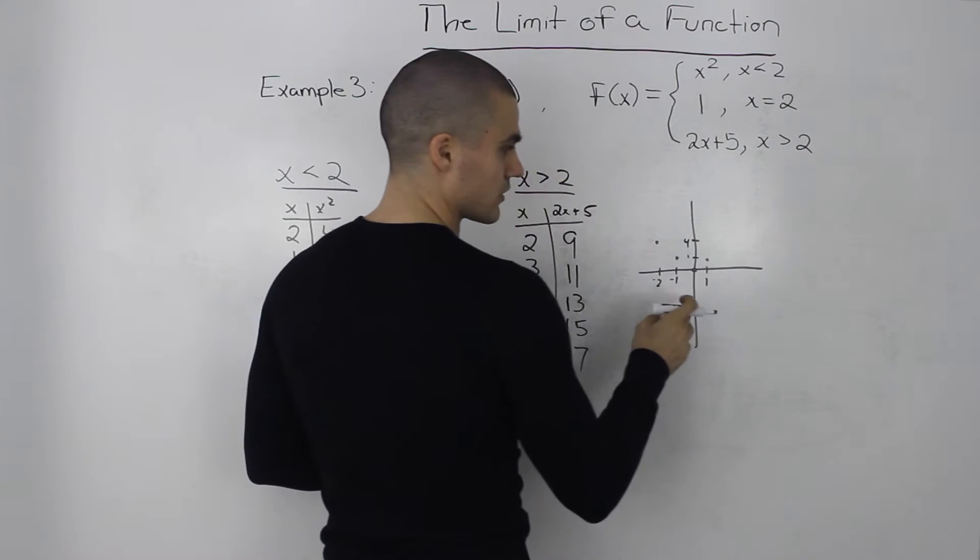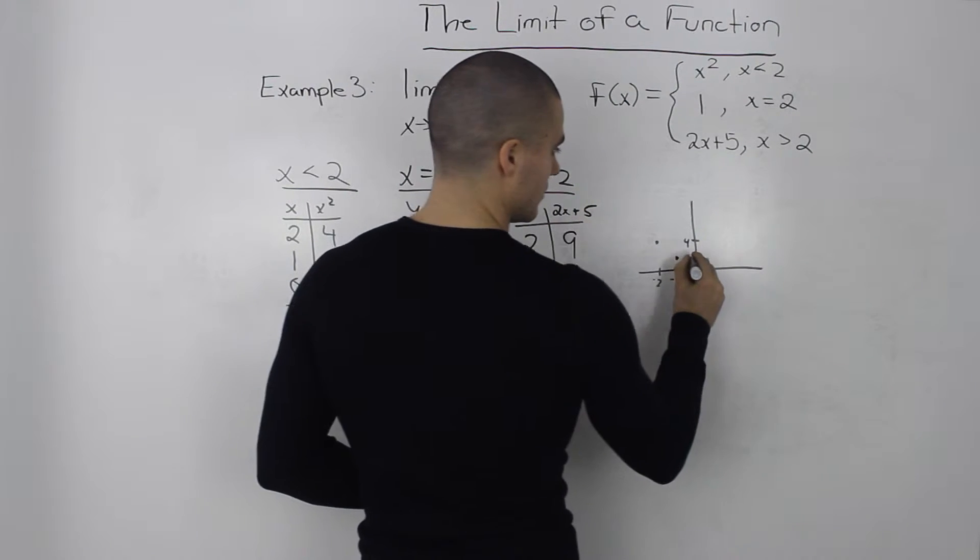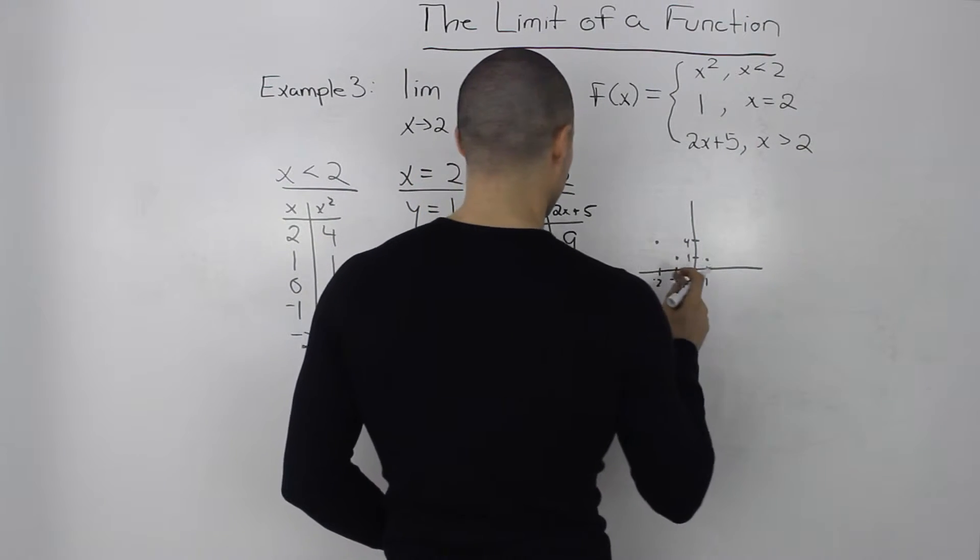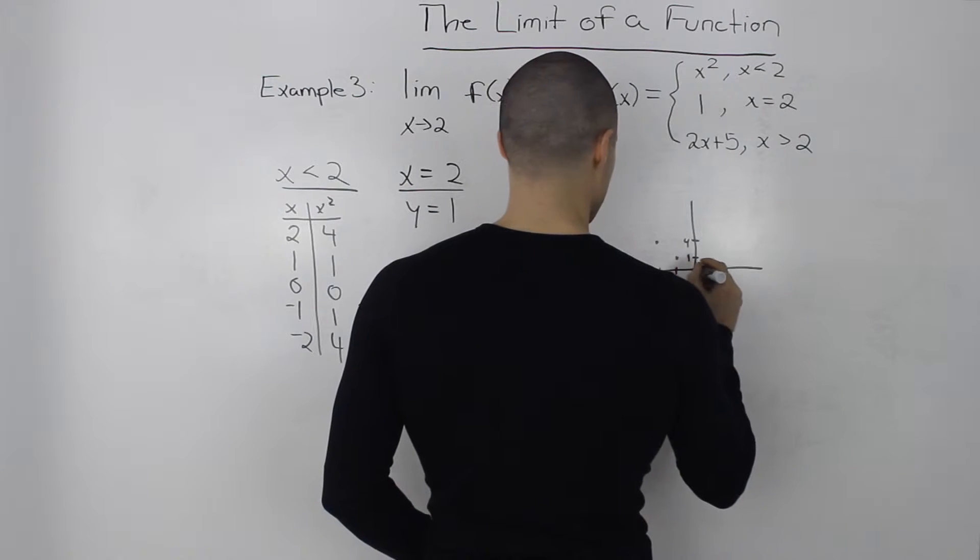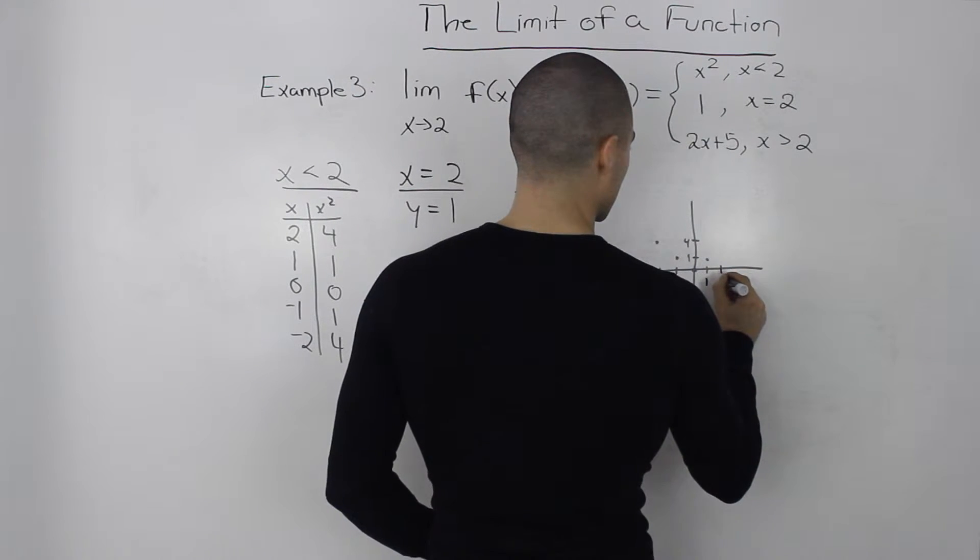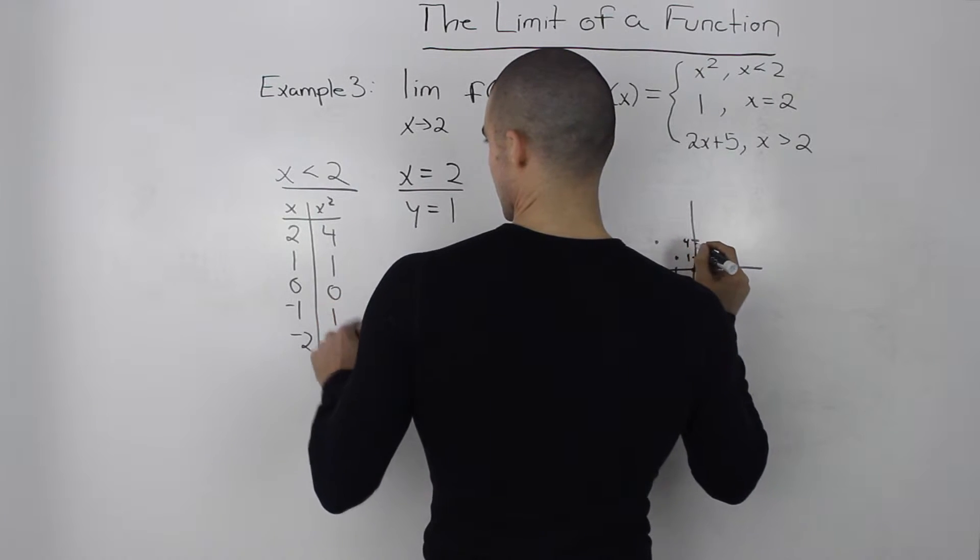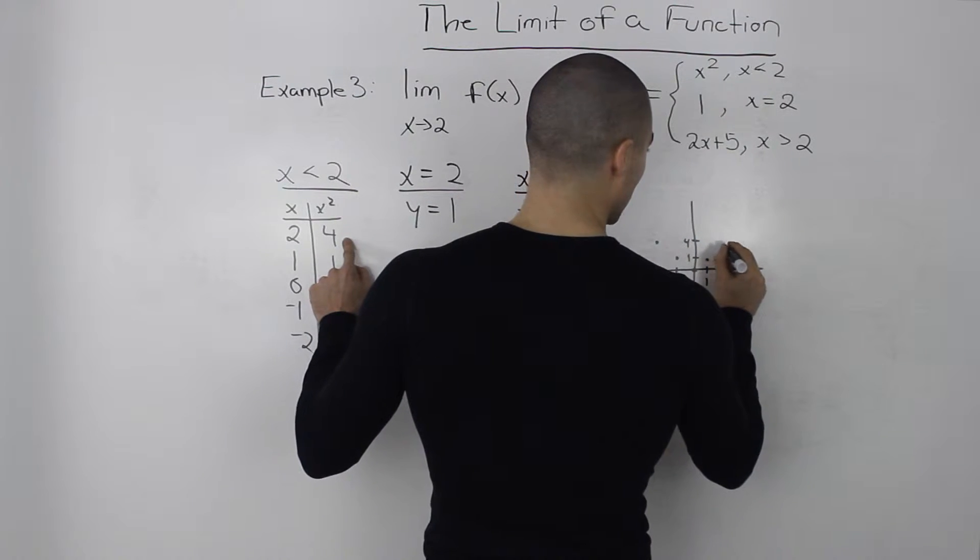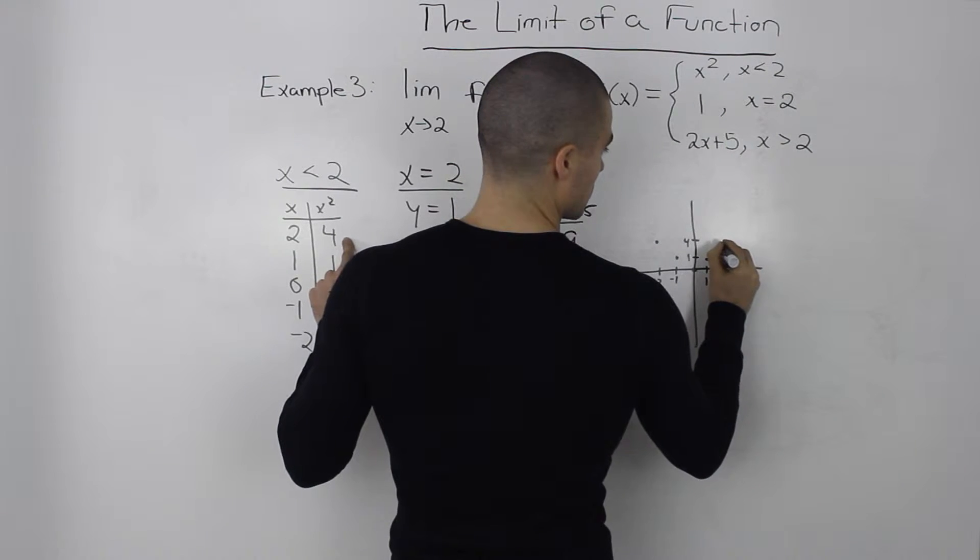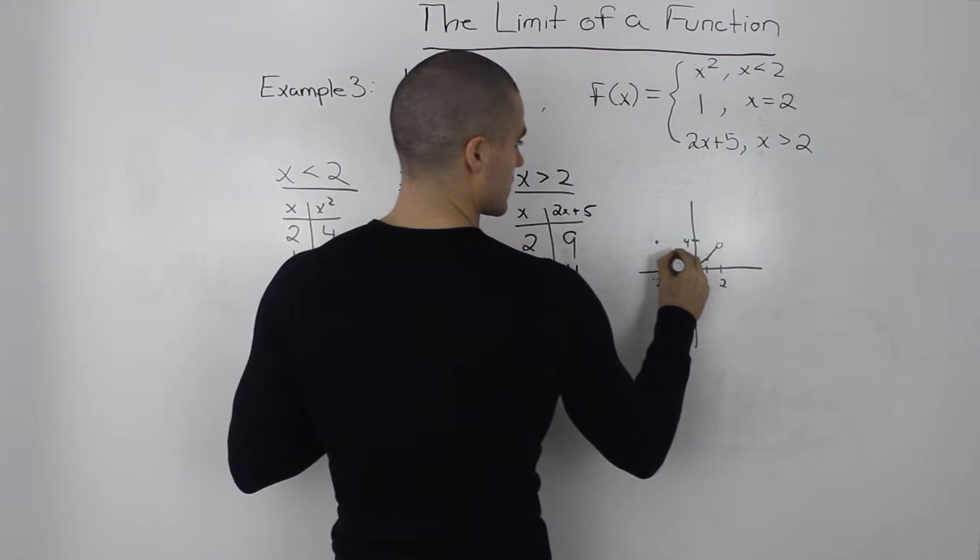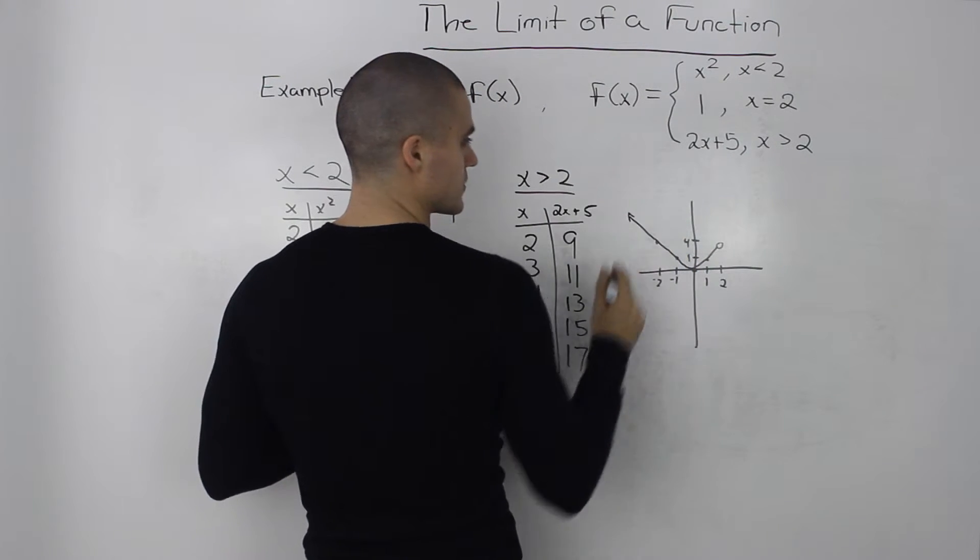Then at 1 we have a y value of 1. By the way my graphs aren't necessarily to scale. Just more so the shape is what matters in seeing where the continuation lies. So 1 and then for 2 we have a y value of 4. But notice that it's not defined at 2. So it's a hole here.